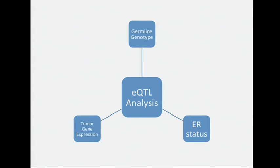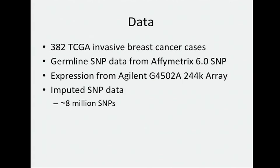Our EQTL analysis consisted of three parts: our germline genotype data, our tumor gene expression data, and our ER status data. This was from 382 TCGA invasive breast cancer cases from Caucasian individuals. Our germline SNP data came from an AFI-6 SNP array, and our expression came from an Agilent 244K custom array. We took about 1 million loci from the AFI-6 array and imputed it to about 8 million loci for the analysis.